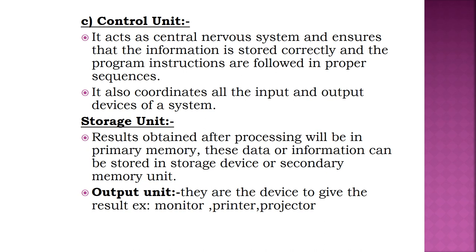The Output Unit consists of devices used to display results or processed output. Output data is first stored in main memory and then displayed in human-readable form via output devices. Widely used output devices include monitor, printer, and projector. These are the units in the block diagram of a computer. Now let us move on to the next topic — the Evolution of Computers.